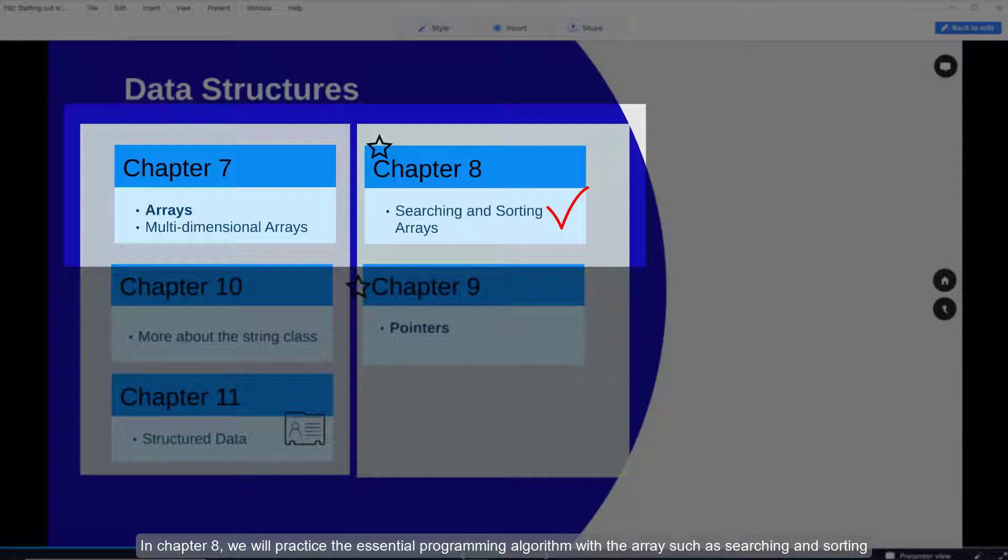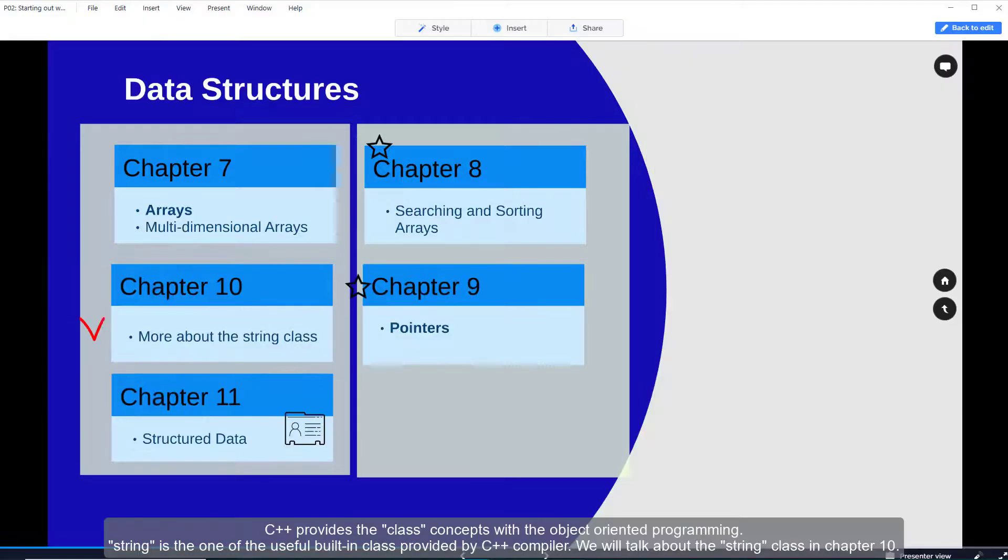In chapter 8 we will practice the essential programming algorithms with arrays such as searching and sorting. C++ provides the class concept with object oriented programming. The string is one of the useful built-in classes provided by C++ compiler. We will talk about the string class in chapter 10.